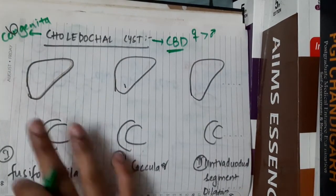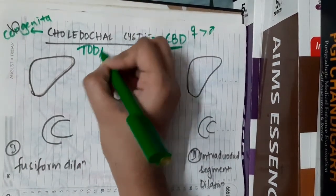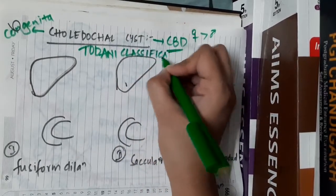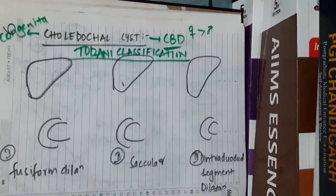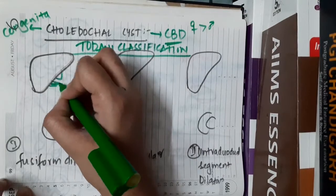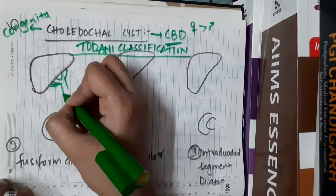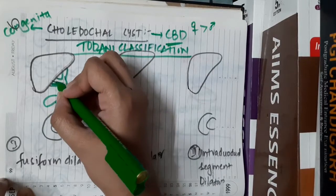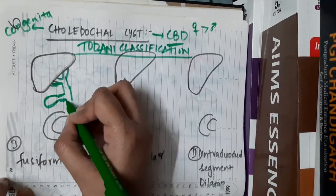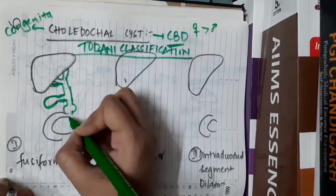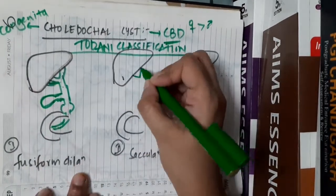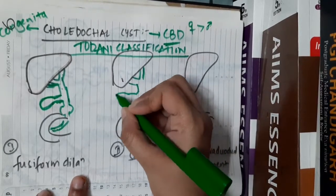The classification we use is the Todani classification of choledocal cyst. In Type 1, there is fusiform dilatation of the common bile duct. The relevant anatomy includes the right and left hepatic duct, common hepatic duct, cystic duct, gallbladder, and the common bile duct.